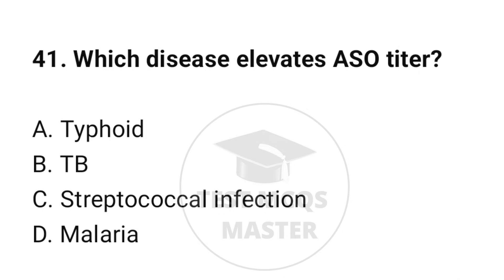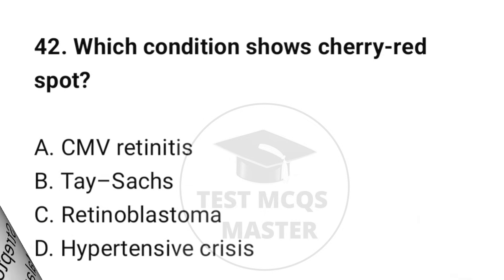Question number 41: Which disease elevates ASO titer? The correct option is C: Streptococcal infection. Question number 42: Which condition shows cherry red spot? The correct option is B: Tay-Sachs disease.